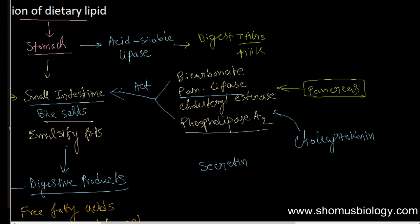Another protein, secretin, stimulates the secretion of bicarbonate and positively influences its production. Both cholecystokinin and secretin are hormones, and they are regulated by hormones themselves.